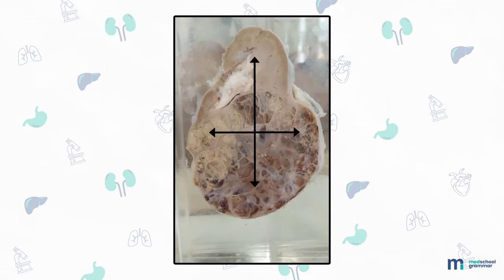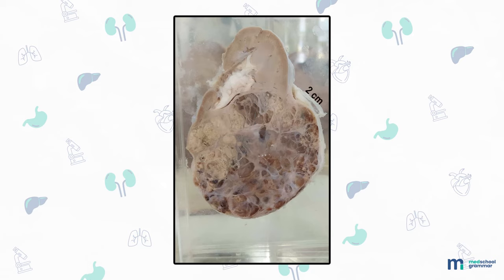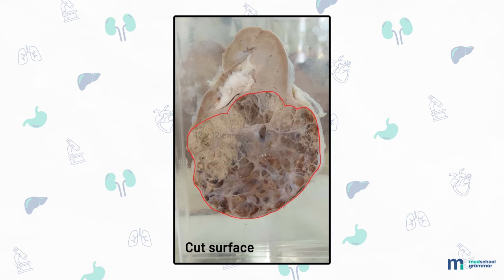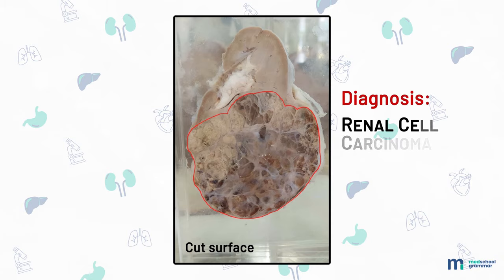Specimen of kidney, 20 by 15 centimeter, with 2 centimeter length of ureter. External surface: shape of kidney distorted with lower half showing bosselation. Cut surface: normal kidney seen in upper portion; the lower half shows a 12 by 12 centimeter tumor, yellow-white with areas of hemorrhage and cystic appearance. The tumor is well circumscribed. Diagnosis: renal cell carcinoma.